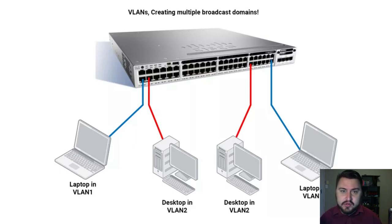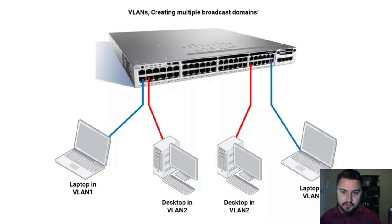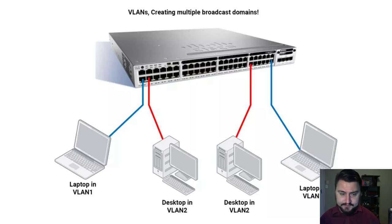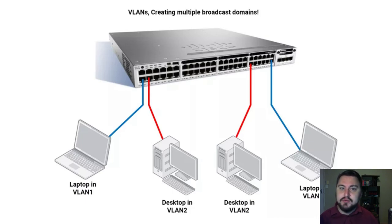Here's another picture showing different broadcast domains. If I have a laptop in VLAN 1 and I try to get to a machine in VLAN 2, it won't work because the switch will not allow traffic across those broadcast domains. However, I would be able to reach the other laptop also in VLAN 1, and the two machines in VLAN 2 would be able to communicate directly. If machines are in the same subnet and the same VLAN, they can talk to each other without a router. You only need a router to break out to a different VLAN, a different IP range, or a different network.